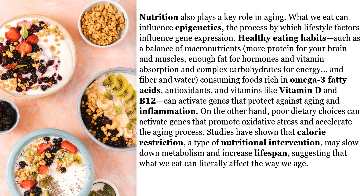Nutrition also plays a key role in aging. What we eat can influence epigenetics — the process by which lifestyle factors influence gene expression. Healthy eating habits, such as a balance of macronutrients — more protein for your brain and muscles, enough fat for hormones and vitamin absorption, and complex carbohydrates for energy, fiber, and water — matter greatly. Consuming foods rich in omega-3 fatty acids, antioxidants, and vitamins like vitamin D and B12 can activate genes that protect against aging and inflammation. On the other hand, poor dietary choices can activate genes that promote oxidative stress and accelerate the aging process. Studies have shown that calorie restriction may slow down metabolism and increase lifespan, suggesting that what we eat can literally affect the way we age.